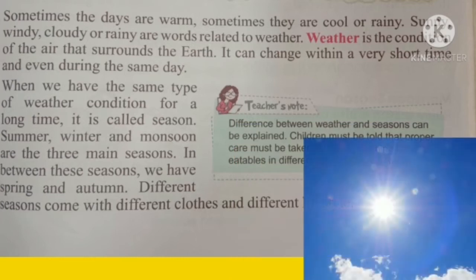Weather is the condition of the air that surrounds the earth. तो weather क्या होता है students? हमारे earth पे चारो तरफ जो air surround कर रही है, उससे जो भी atmosphere रहता है, उसे weather बोलते हैं. It can change within a very short time and even during the same day. Morning में कुछ और weather होता है, afternoon में different, evening में different — तो weather एक दिन में कई बार change होता है.